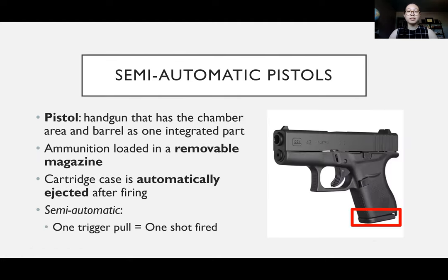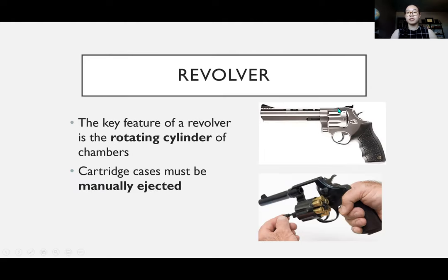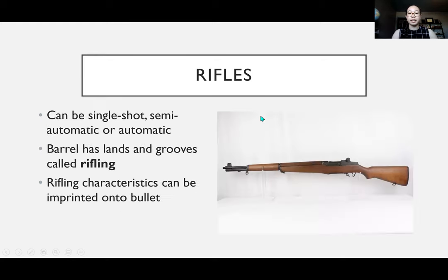Pistols are handguns that have the chamber and barrel as one integrated part. With revolvers, the rotating cylinder is separate from your barrel, but in a pistol they're one integrated unit. The way you load these is with a removable magazine — you push a button, the magazine pops out, you load your cartridges into it, push it back in, and it's ready to use.